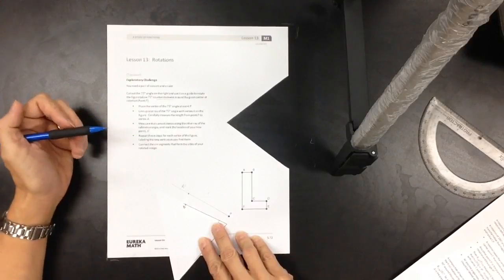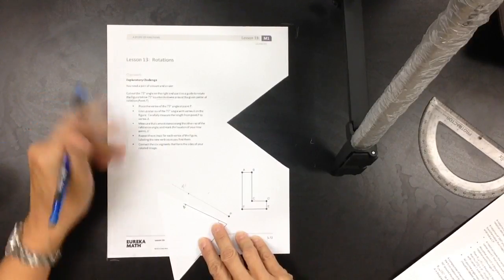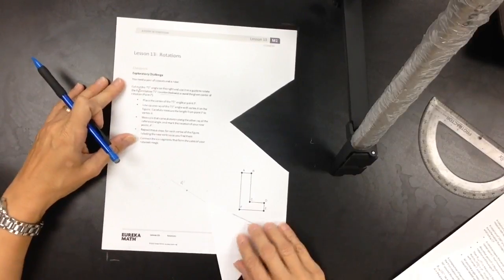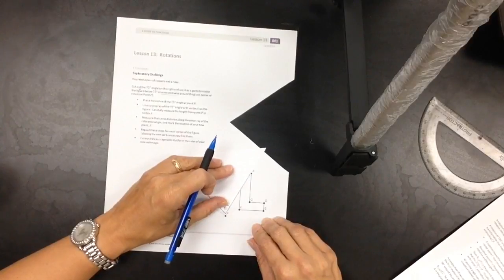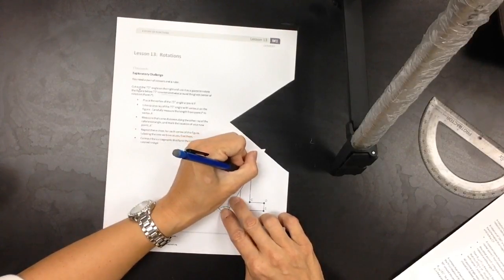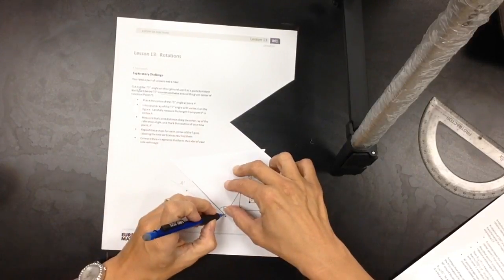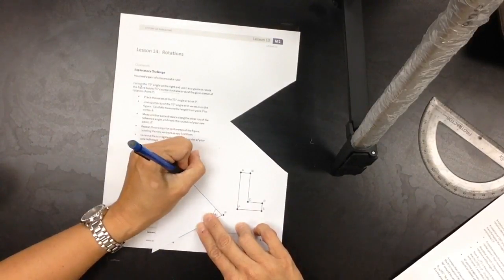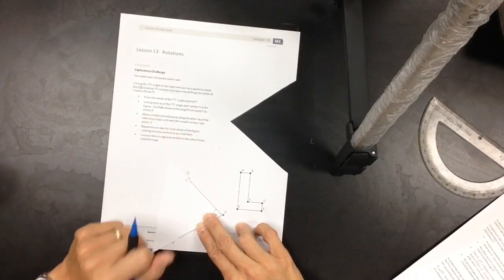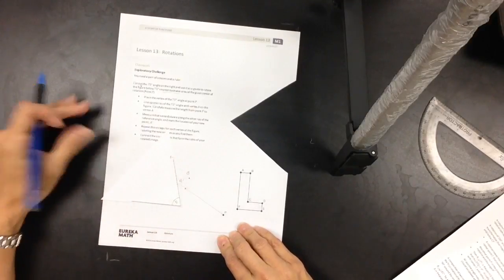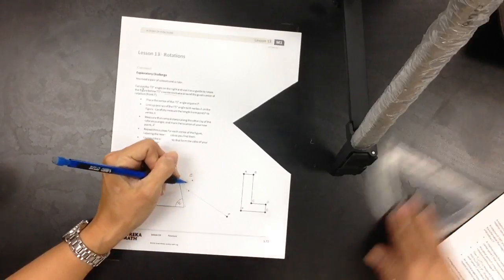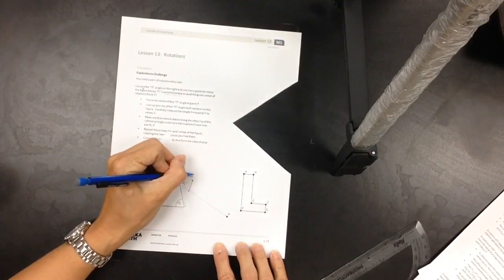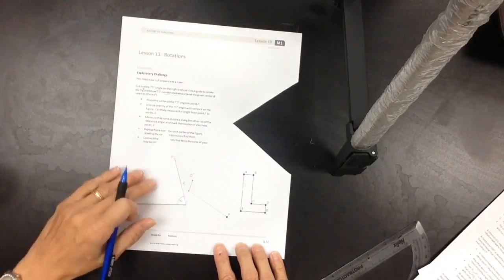I'm going to do one more point for you, and then I'm going to ask you to do the rest of them. Repeat these steps for each vertex of the figure, labeling your vertices as you find them. So let's do B. I'm going to line this up. There is B. I'm going to draw this ray so that I can measure B. There is B. Keep going around the figure, and you will find at the end, you will have a nicely rotated L shape. There is A prime and B prime, but I'm not going to finish them all for you here.